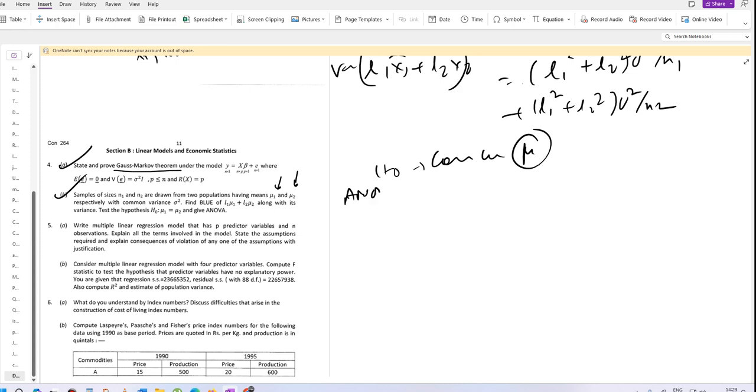This is the ANOVA formation. Sources of variation: between, within, and total. Sum of squares.